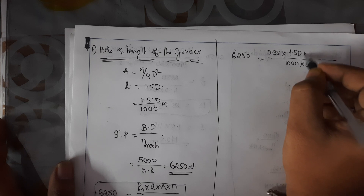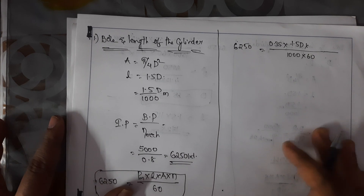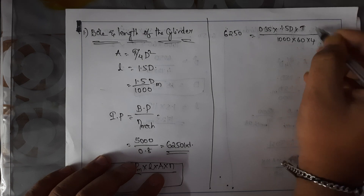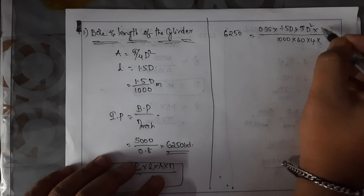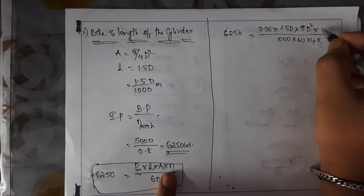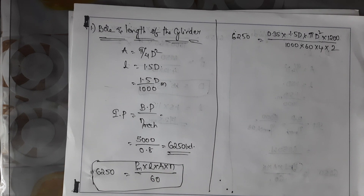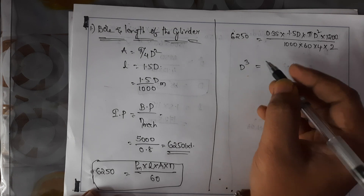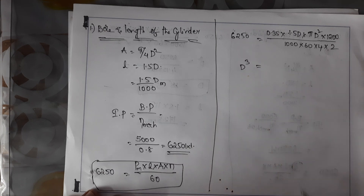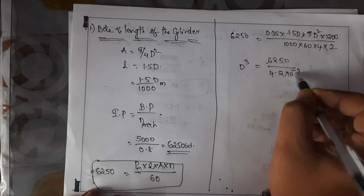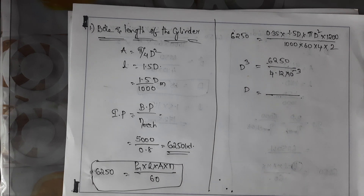The area A = π/4 × D², and the speed N = 1200/2, dividing by 2 because it is a four-stroke engine. Solving through, we get D³ = 6250 / (4.12 × 10⁻³). Solving this gives the diameter D.